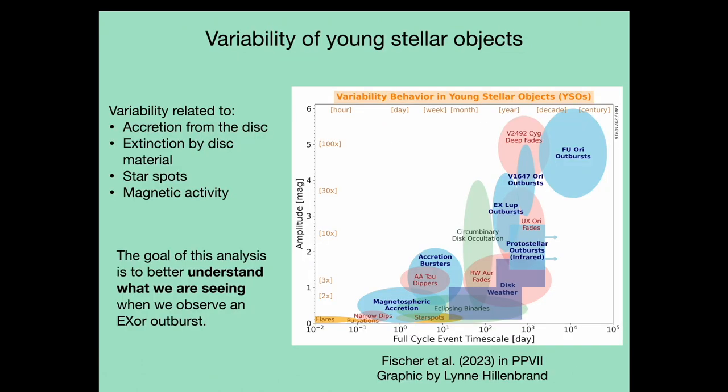Here we see a schematic of young stellar variability produced by Lynn Hillenbrand for Protostars and Planets 7. Behaviors range from small-scale variations on timescales of hours to days, to the extreme end where outbursts of several magnitudes occur on timescales of years to decades. The event I'll be discussing is a fairly moderate outburst, falling in the middle of the group labelled EX Lupi. The goal of my analysis is to better understand what exactly we are seeing when we view the emission from this object.